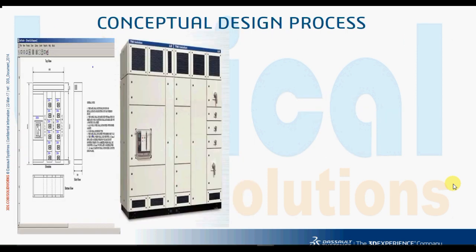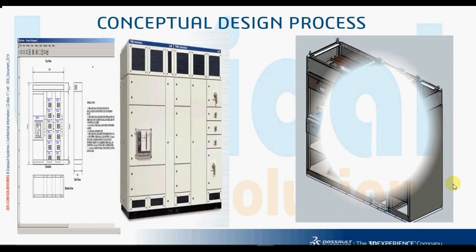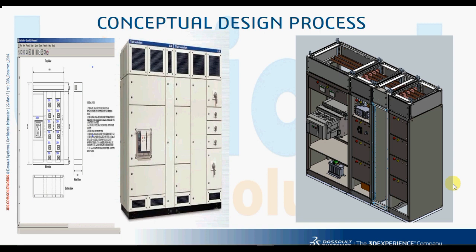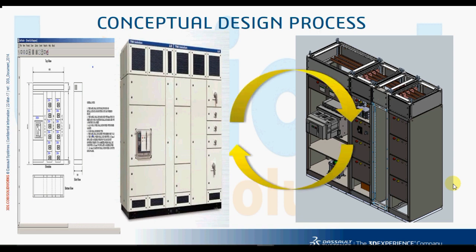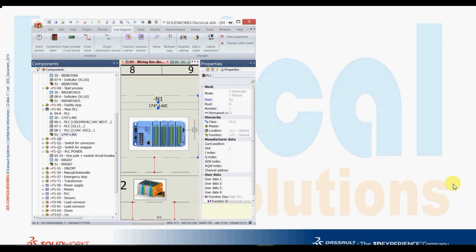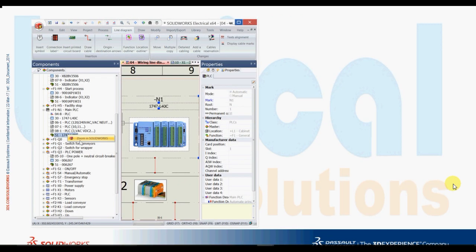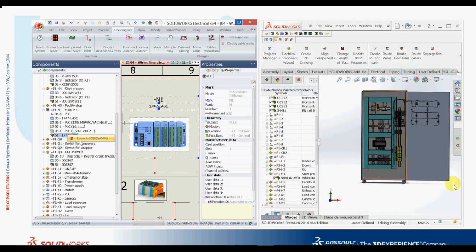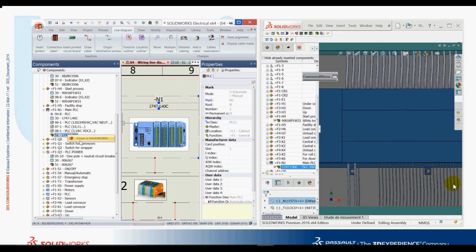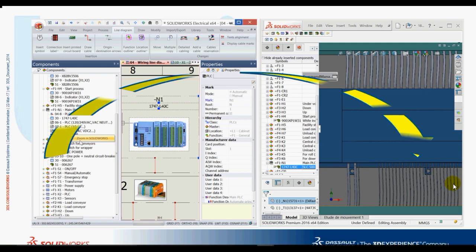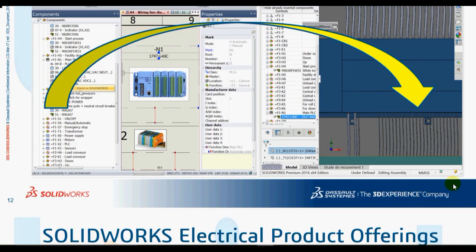Let us see how we can design 2D and 3D schematics for a switchgear. In this slide, we observe how a main distribution panel can be created in a 2D schematic and how it is then converted to an electrical 3D design. We also observe how a PLC is created in an electrical 2D schematic and converted to an electrical 3D design with a zoom-in view in the SOLIDWORKS 3D window.